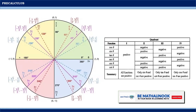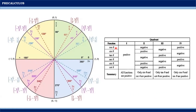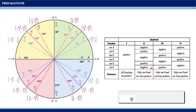Furthermore, if the angle is in the second quadrant where x-coordinates are negative and y-coordinates are positive, then cosine (equal to x) will be negative, sine (equal to y) will be positive, tangent (equal to y/x) will be negative, secant (equal to 1/x) will be negative, cosecant (equal to 1/y) will be positive, and cotangent (equal to x/y) will be negative. As a summary, only sine θ and cosecant θ are positive; the rest are negative.